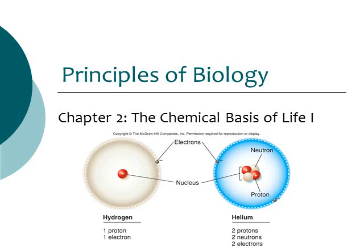This is part three of three on chapter two, the chemical basis of life, part one. To review: in the first part of this chapter we talked about atoms and the different parts of atoms and how they're arranged on the periodic table. Part two we looked at how different atoms come together to form molecules and compounds, and we talked about water when we looked at hydrogen bonding and polar covalent bonding. Part three is about the water part.